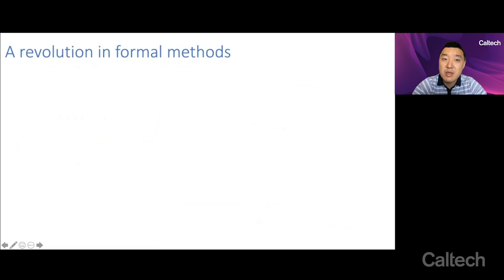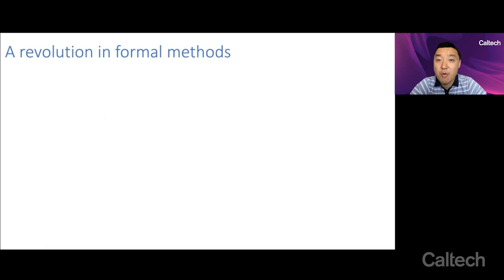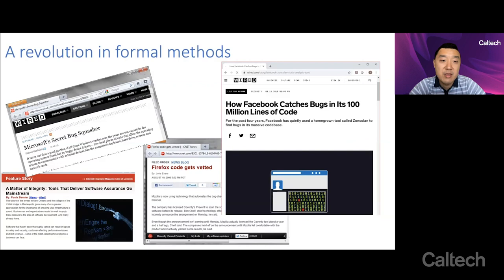Meanwhile, there's been another revolution, a smaller revolution in formal methods. You see this in various headlines where software is being formally verified in a way that is interpretable, verifiable, understandable, and can lead to, in this specific case, a causal reason for why a piece of software has failed and therefore allowing software engineers to fix that bug.